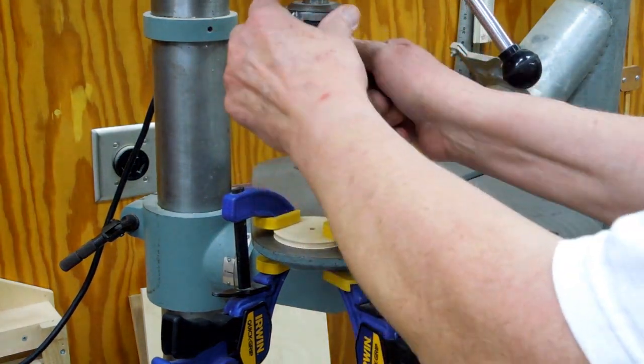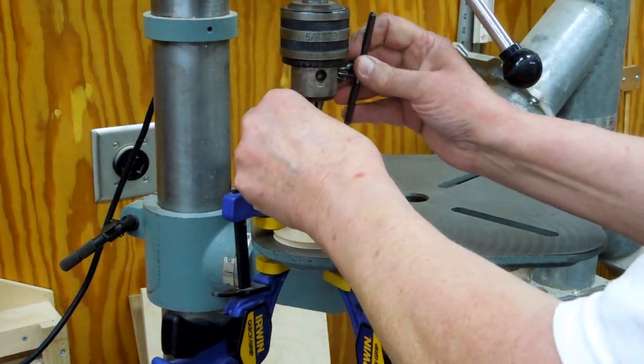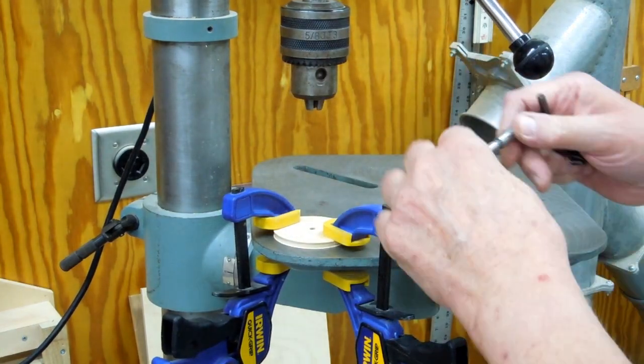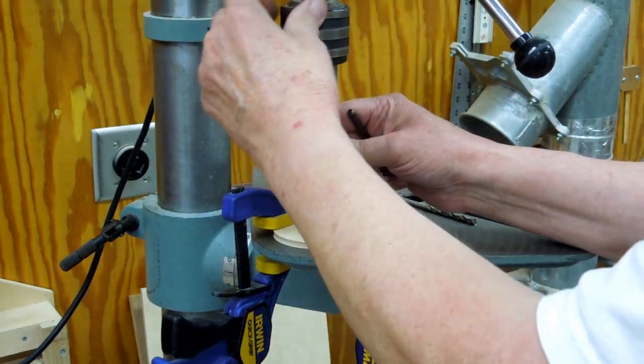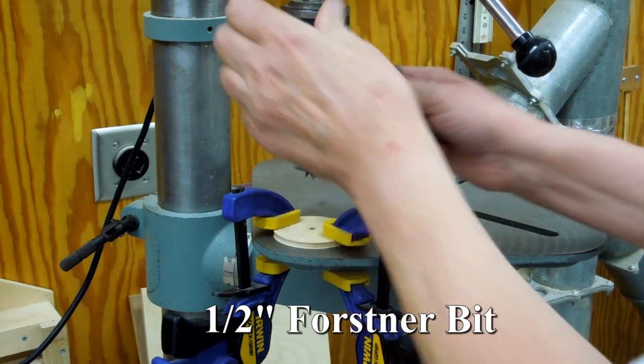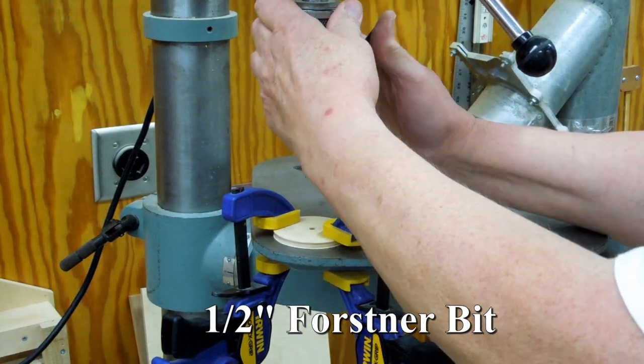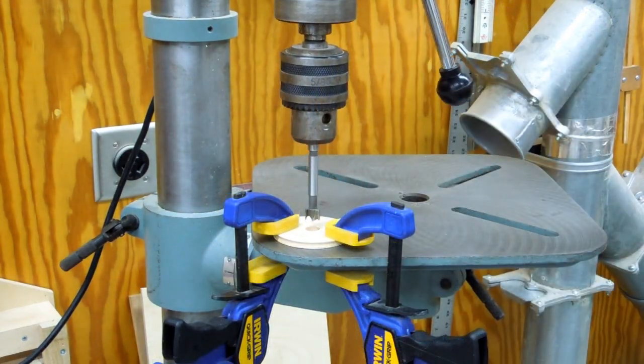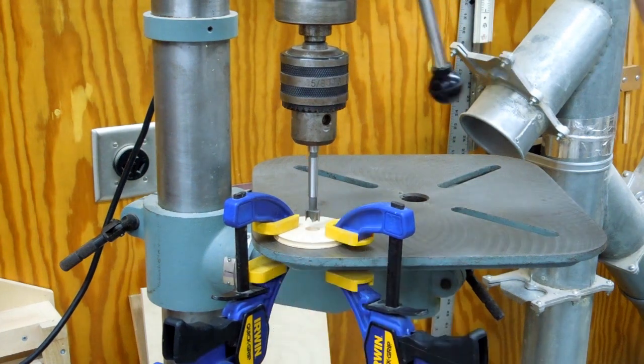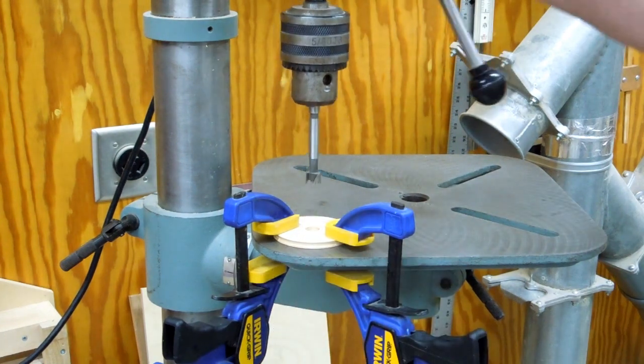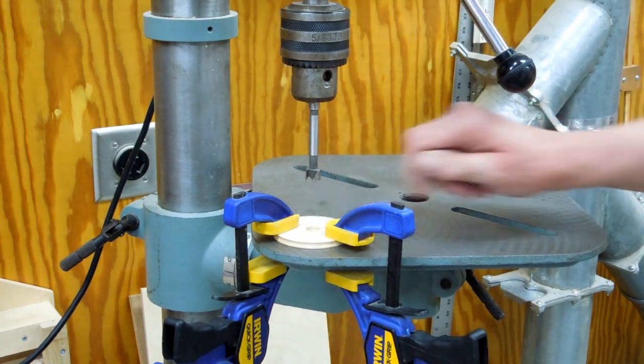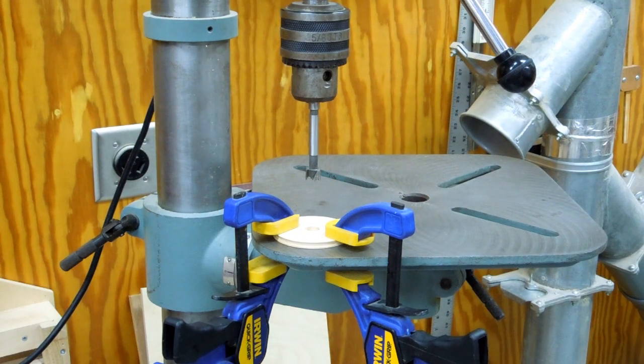I want to put a bearing in here that's a half inch outside diameter, so I'm going to use a half inch forstner bit. I go ahead and drill that hole with the forstner bit and I didn't quite drill it all the way through. I'm leaving a little bit of a ledge in plywood to stop that bearing from going all the way through.